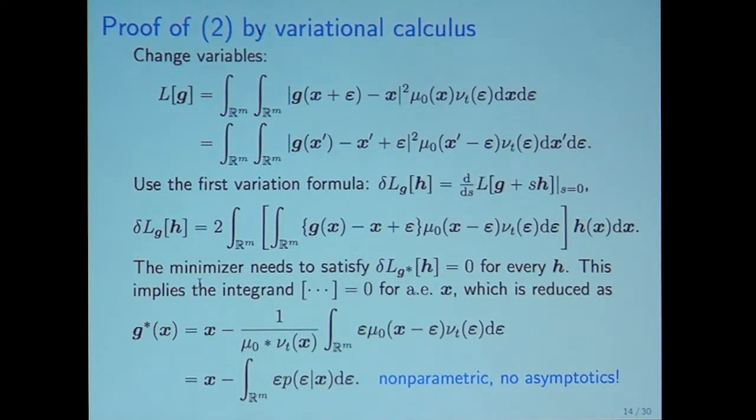A proof directly follows by variational calculus. First change variables. This is just technique. And use first variation formula. Then the first variation is given by this equation. The minimizer needs to satisfy this variation equals zero for every direction h. This implies the integral in the bracket equals zero for almost every x.